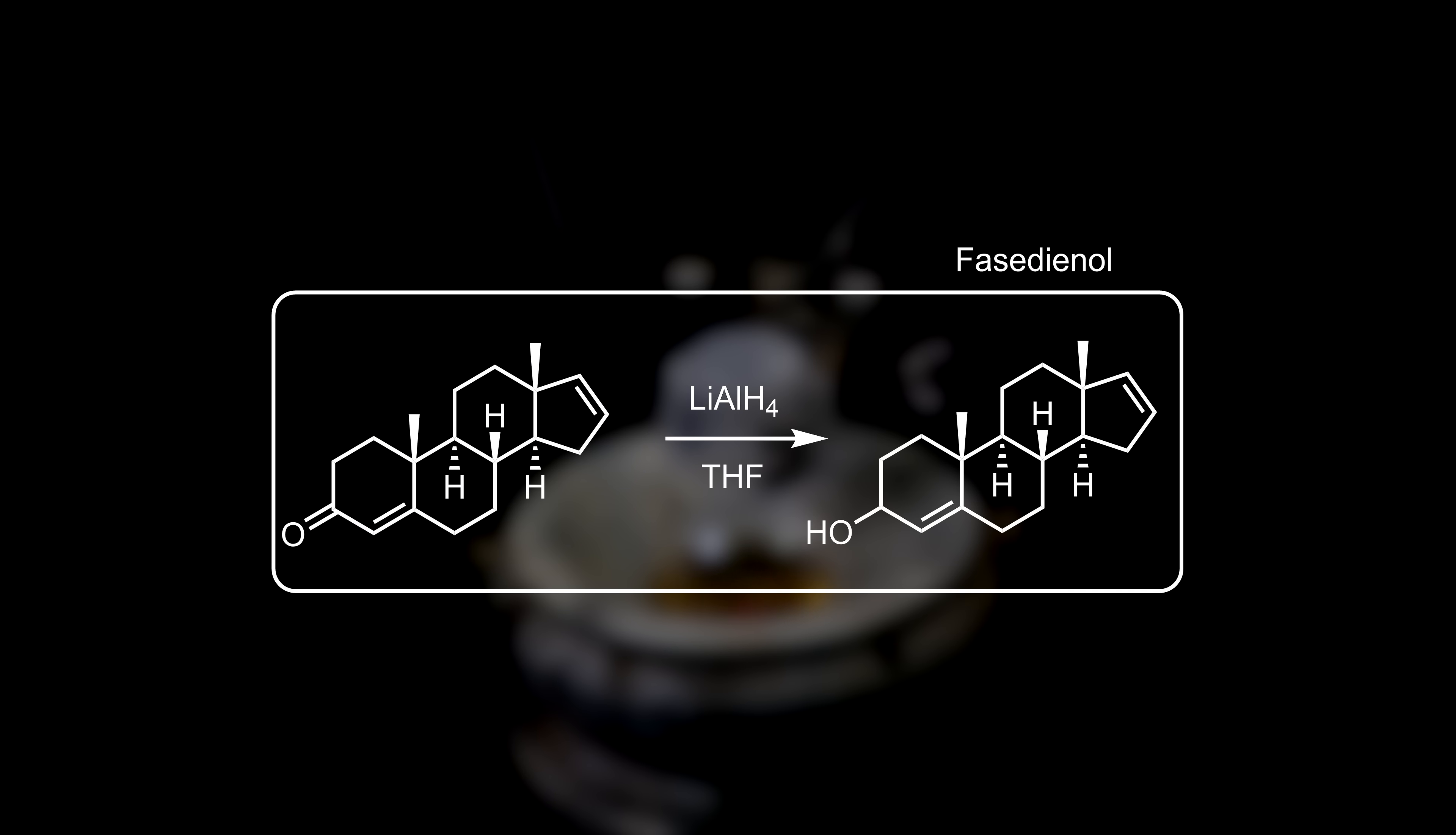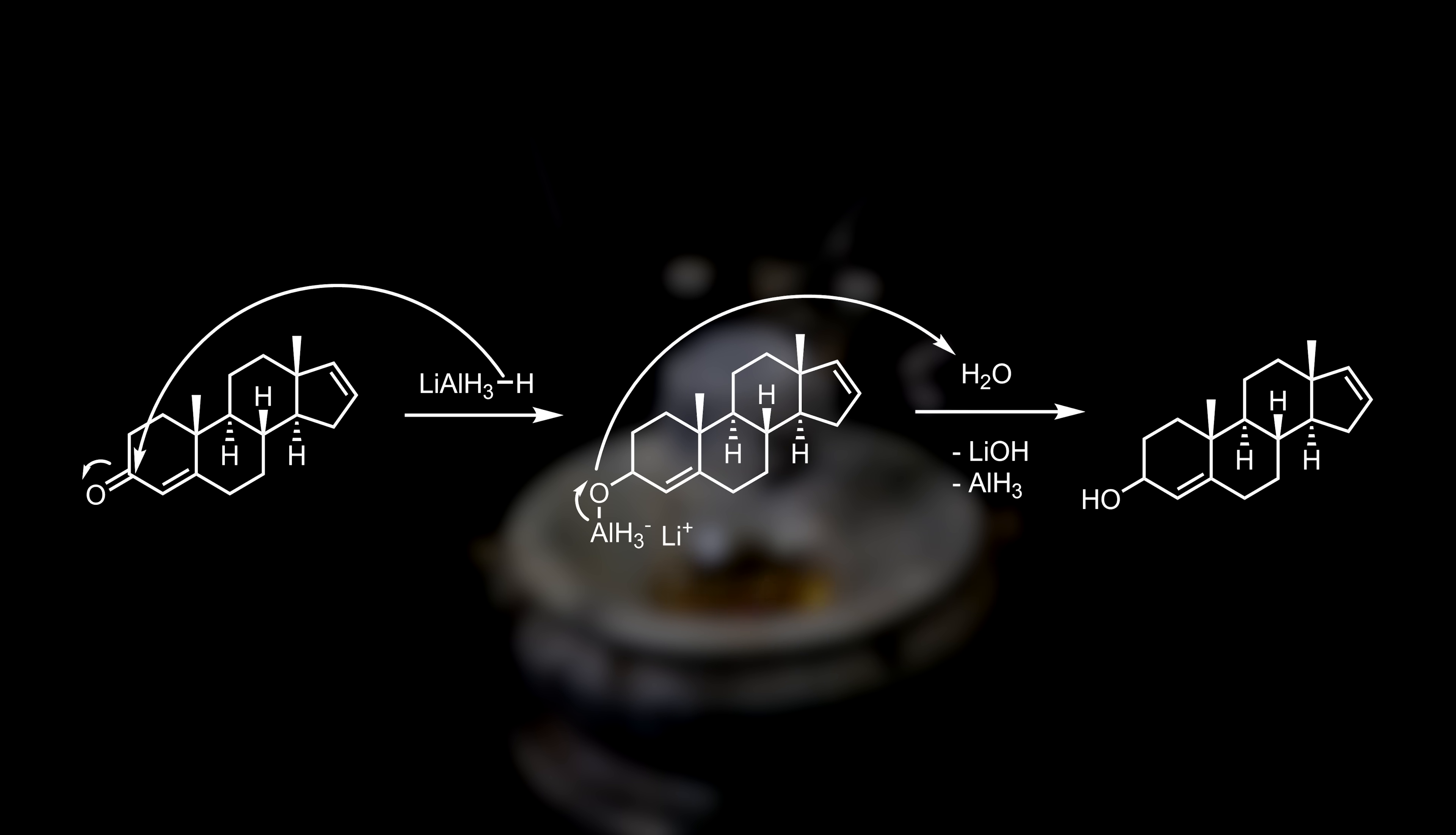In this reaction, the ketone of androstadienone, is reduced to an alcohol, with lithium aluminum hydride giving the product phasedienol. The reaction proceeds typically for this type of reduction. Lithium aluminum hydride easily reduces carbonyls, but leaves alkenes alone, because they are not electrophilic.